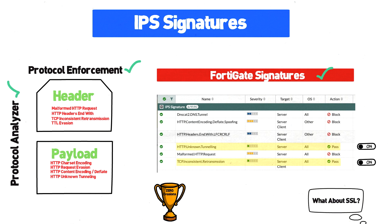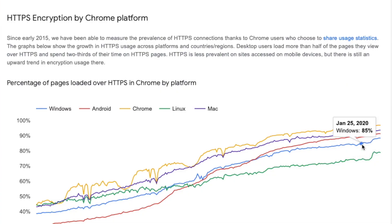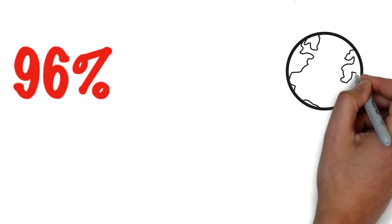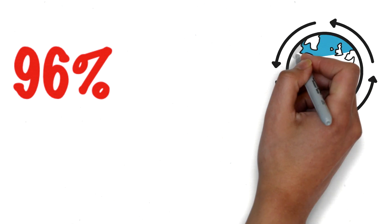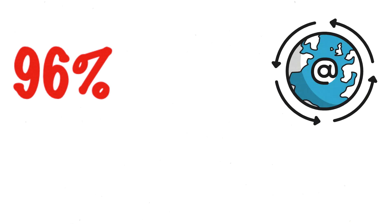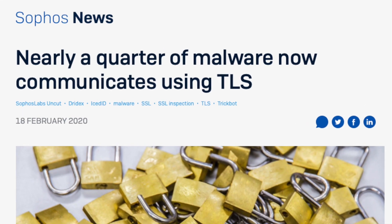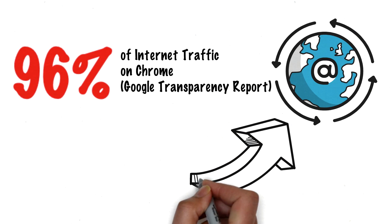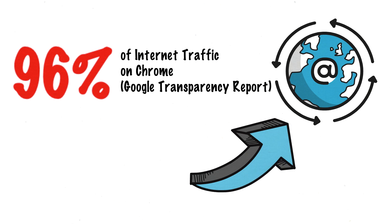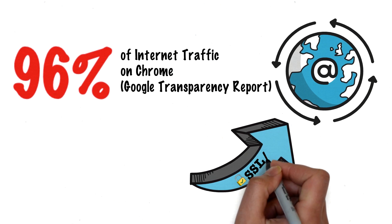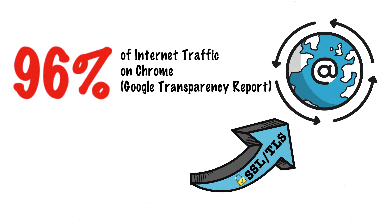That's all good and well, but there's a huge blind spot you may be ignoring by only inspecting clear text traffic. According to Google's transparency report, as much as 96% of web traffic delivered over Chrome was using HTTPS, and the same holds true for malware attempting to reach out from inside your network. Folks recently published a report stating that 23% of malware that attempted to make a network connection was using HTTPS — a growing trend that will only continue to rise because it's an effective technique to communicate back to a command and control server.